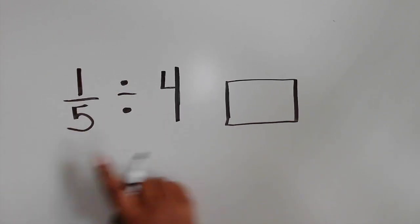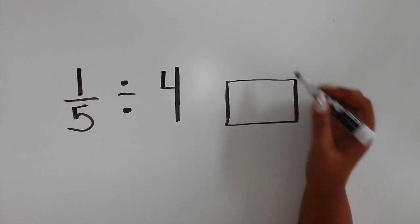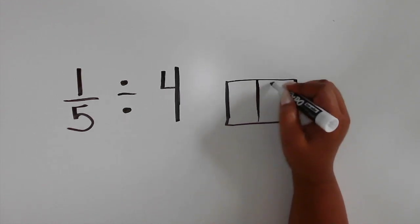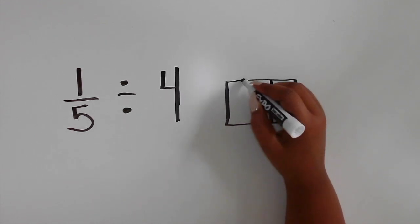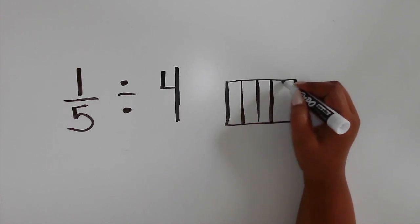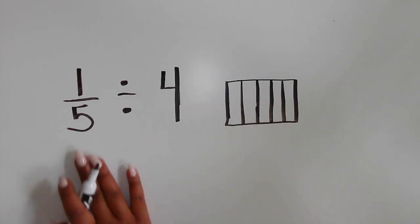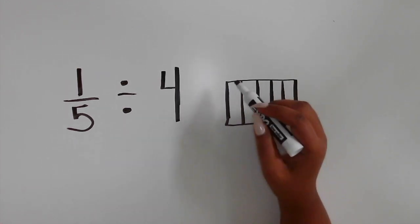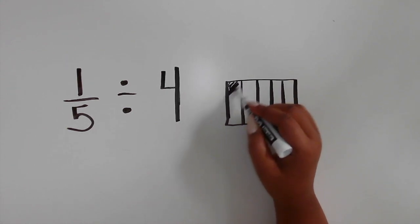The denominator is 5, so partition the rectangle or a whole into fifths, which are five equal parts. Since the fraction that is being divided is 1 fifth, shade in one of the fifths.